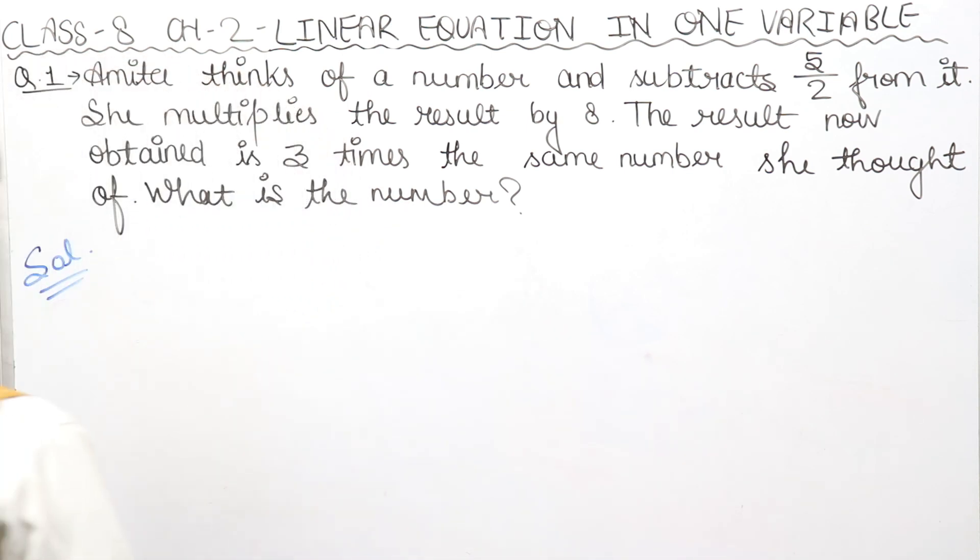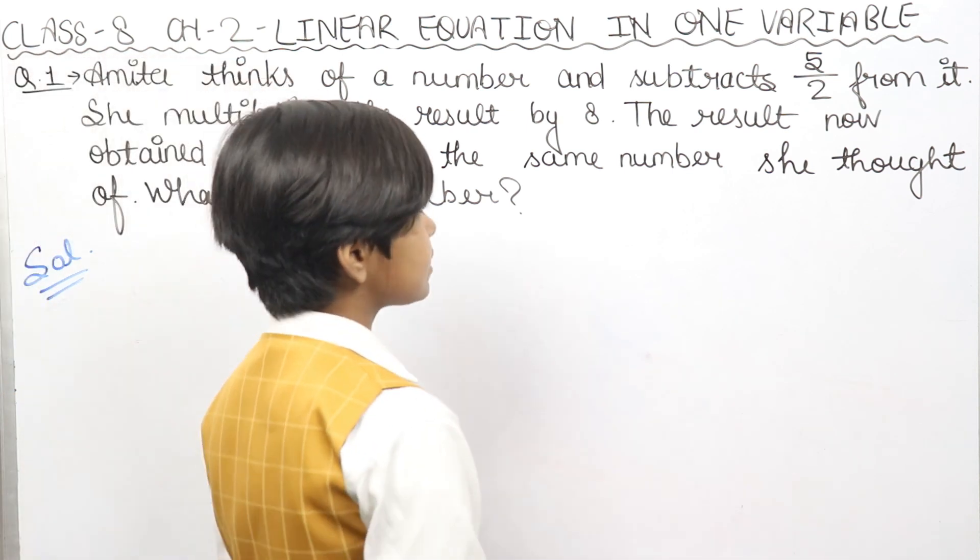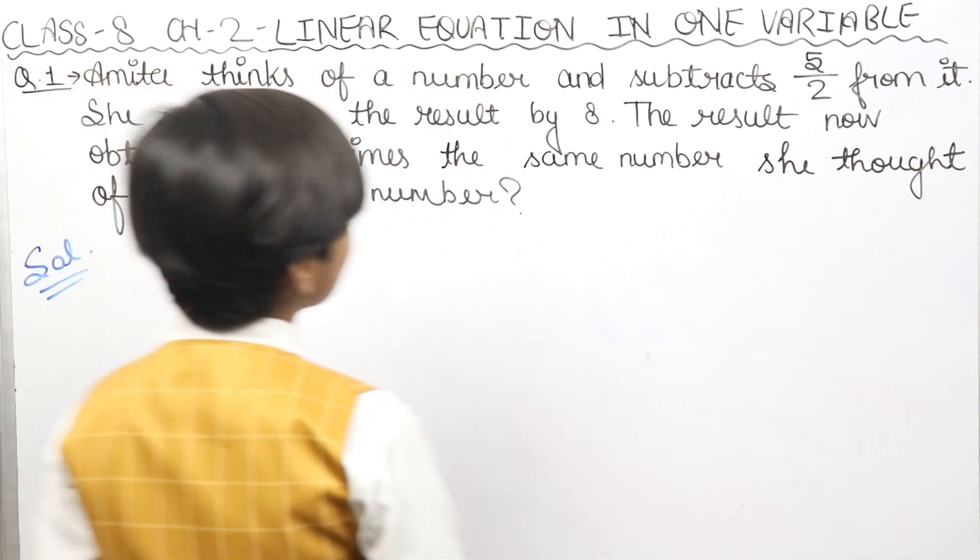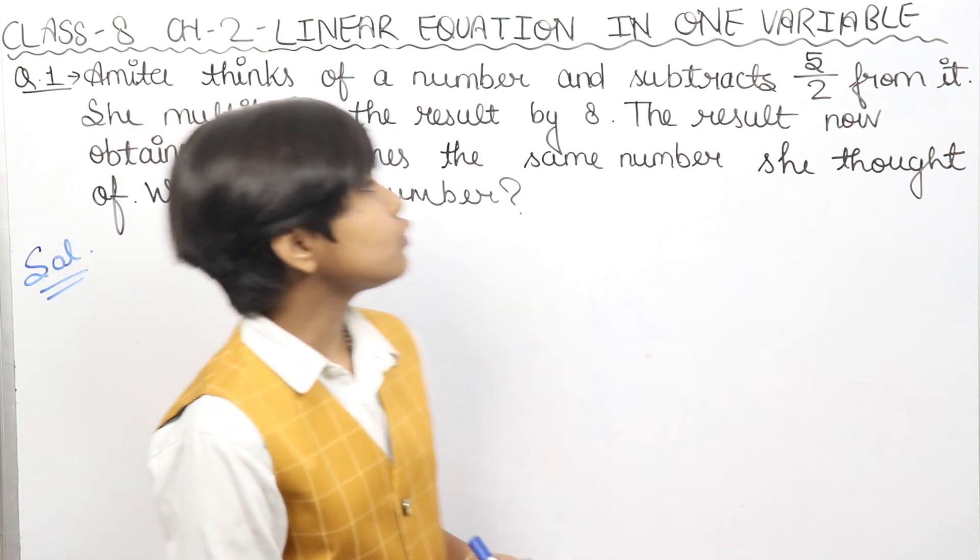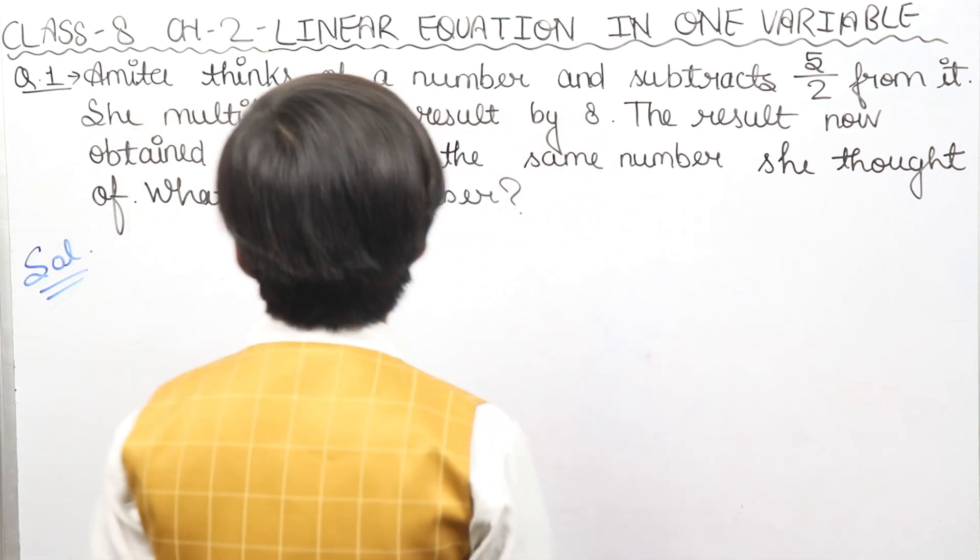Amita thinks of a number and subtracts 5 upon 2 from it. It means that Amita is a girl who thought of a number, and what did she do with that? Minus.